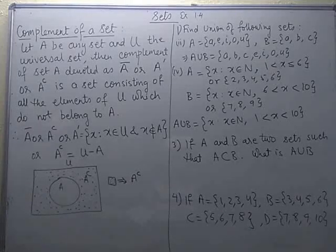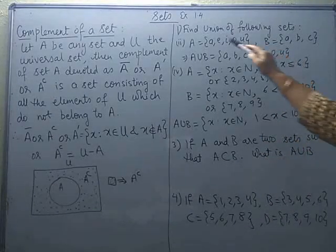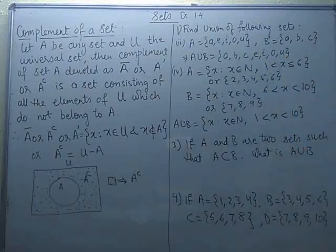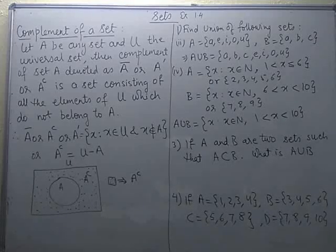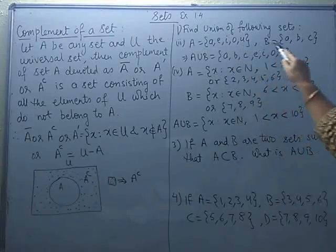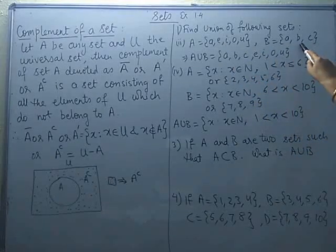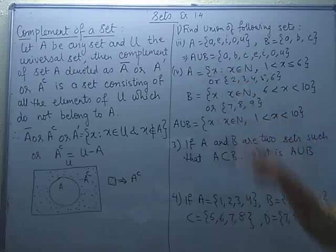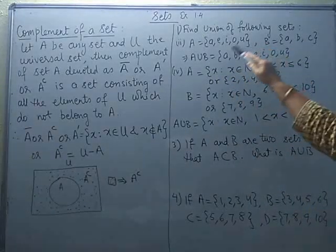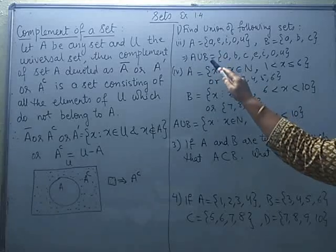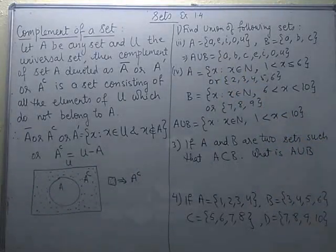Now let us attempt some questions based on the definitions we have done. These are some questions from the exercise. The first one says find the union of the following sets. For union of two sets, we define a new set which includes the elements of both the sets. A is having elements A, E, I, O, U and B is having elements A, B, C. We have to define their union. So A union B will contain those elements which belong to A or which belong to B — they can belong to both also.